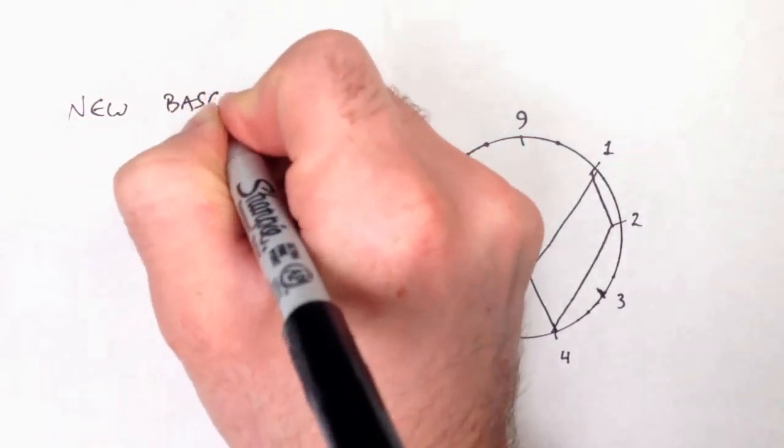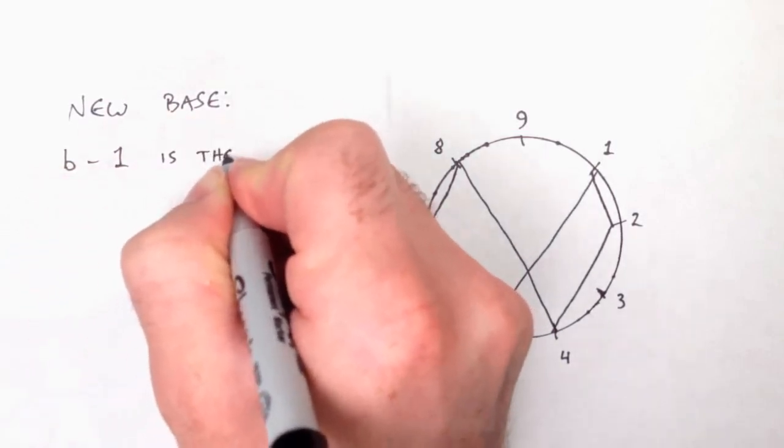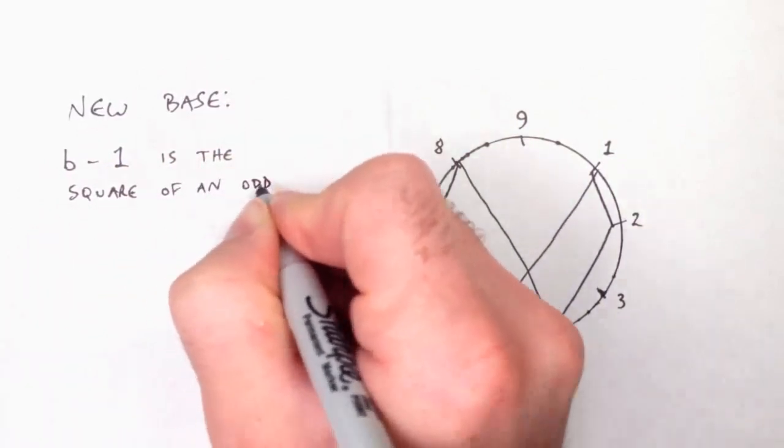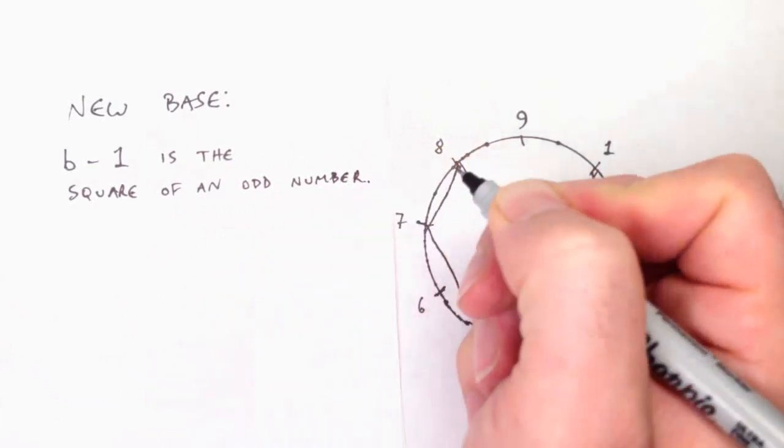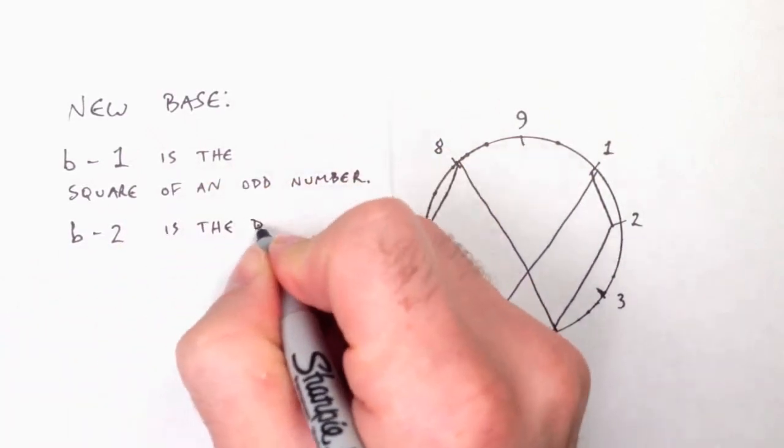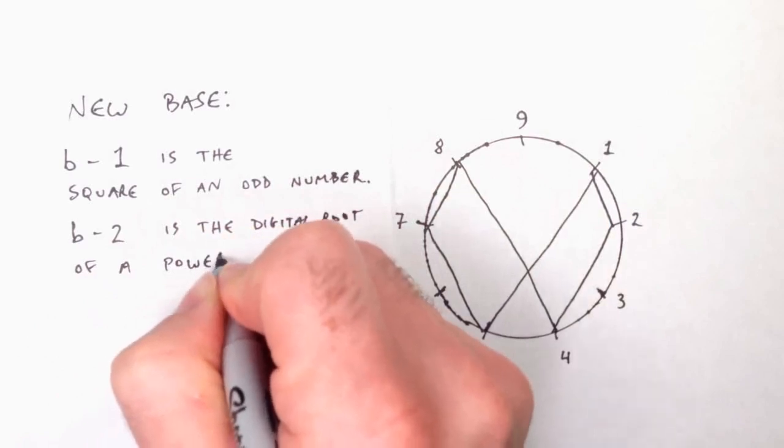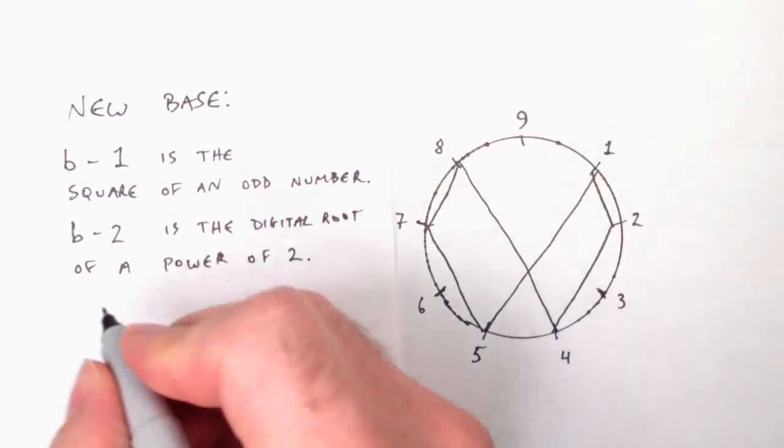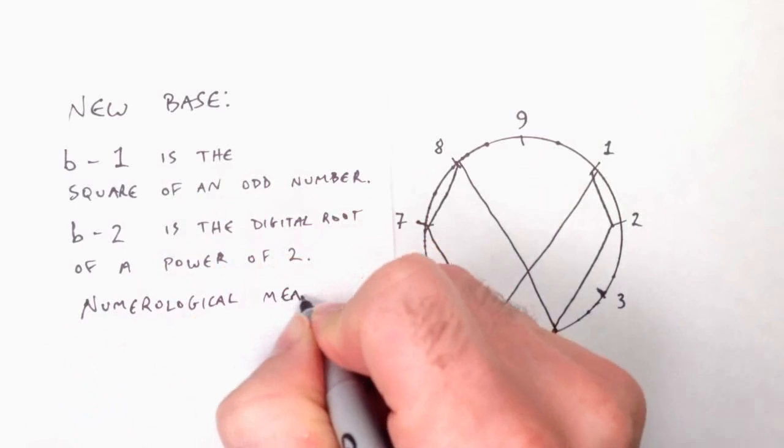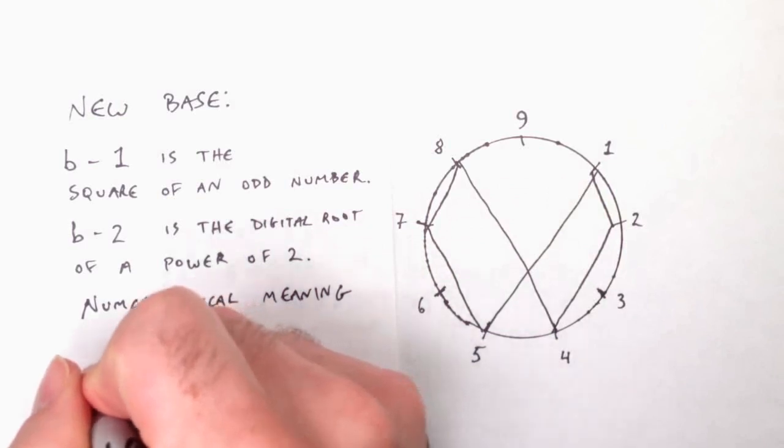Okay, so we figured out how the vortex works. We know the rules. Now we're going to play this again, but with a new base. Here's what it needs to have. One less than the base, the highest digit, must be the square of an odd number. It must be an odd square, just like 9 is the square of 3 in the decimal system. The second highest digit, the base minus 2, just like 8 was the digital root of a power of 2. In this new system, the second highest digit needs to be the digital root of the power of 2. Lastly, it needs to have some kind of numerological significance so that it can take the place of vortex-based mathematics. The number we're going to use is 26. It follows all the rules. The highest digit would be for the number 25, which is 5 squared. And believe it or not, in base 26, 24 is the digital root of a power of 2.